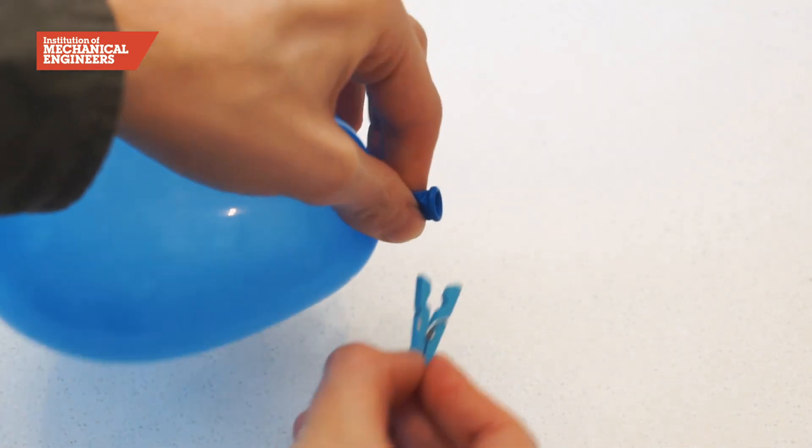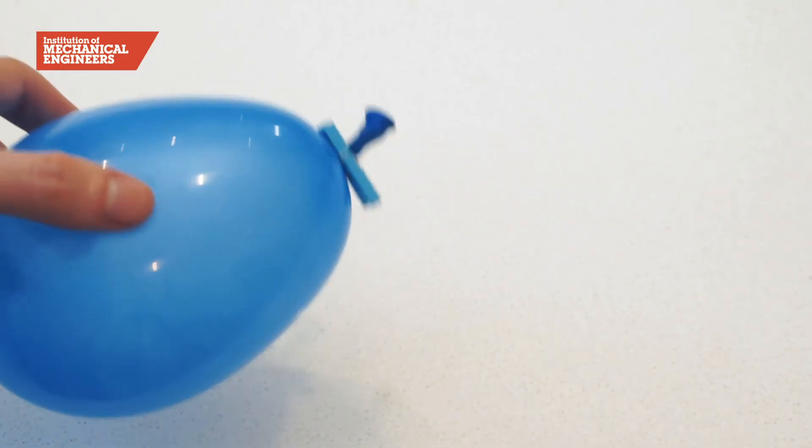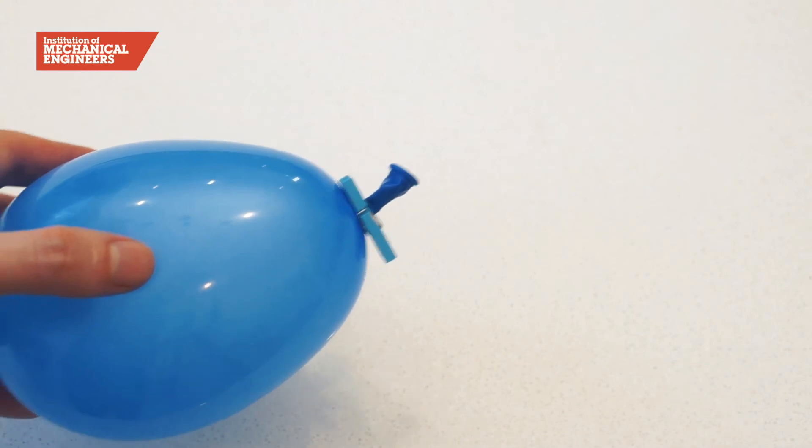Trapping the air inside of the balloon creates potential energy ready to power the rocket when the peg is removed and the air is pushed out of the balloon.